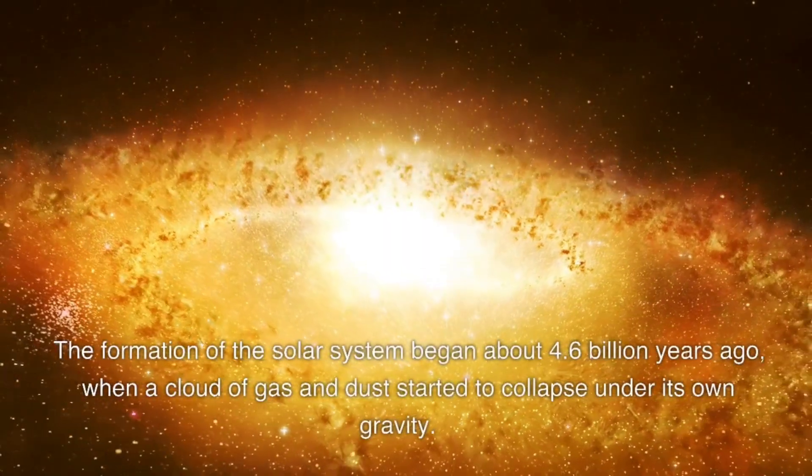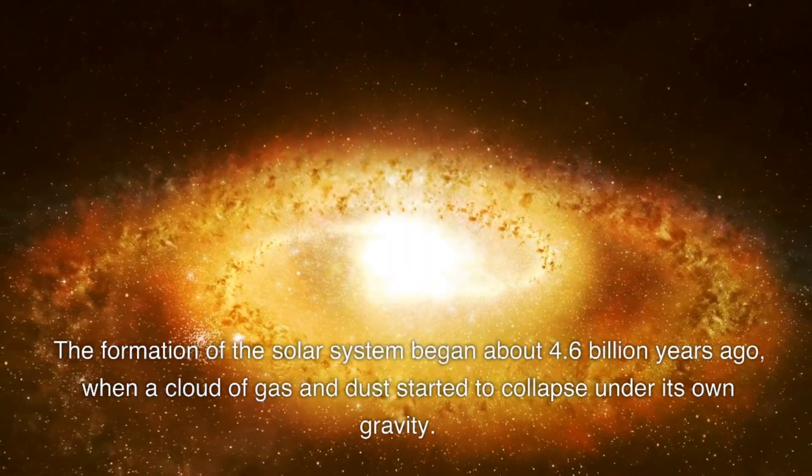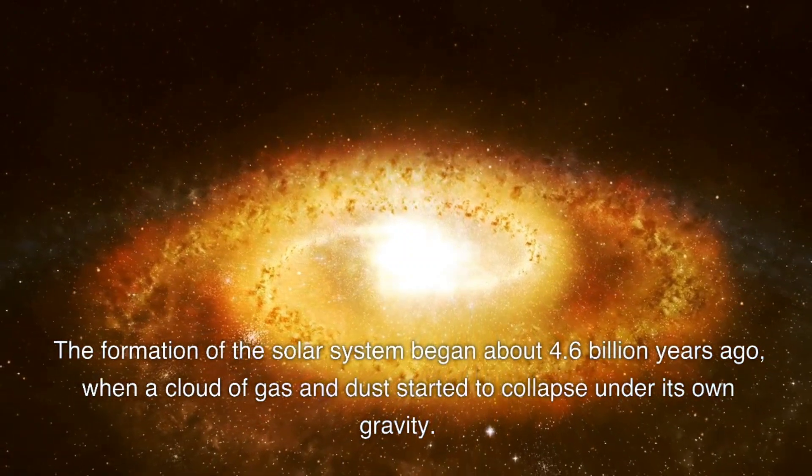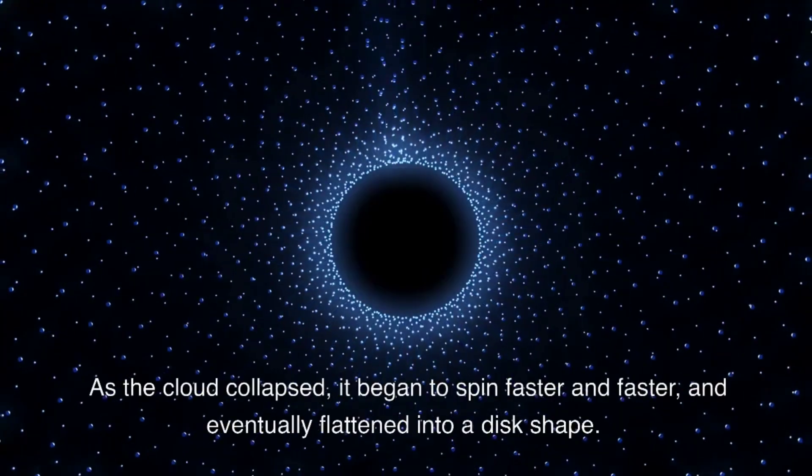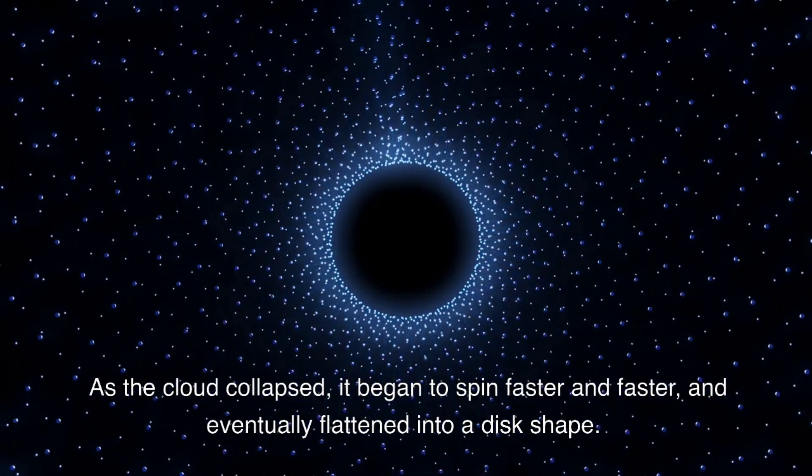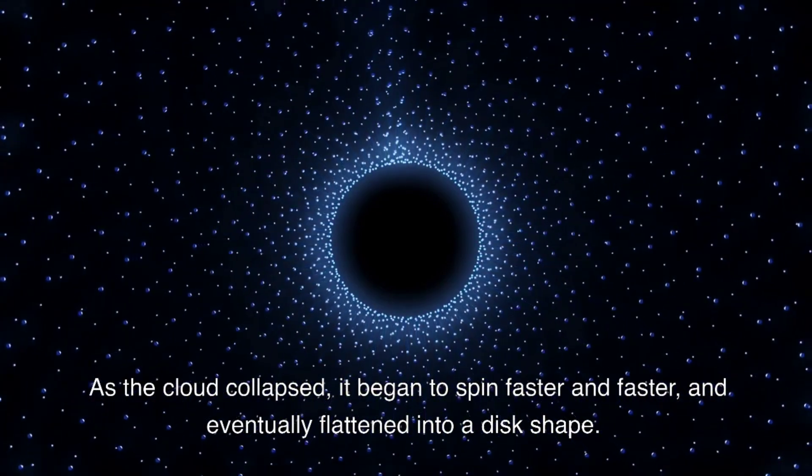The formation of the solar system began about 4.6 billion years ago, when a cloud of gas and dust started to collapse under its own gravity. As the cloud collapsed, it began to spin faster and faster, and eventually flattened into a disk shape.